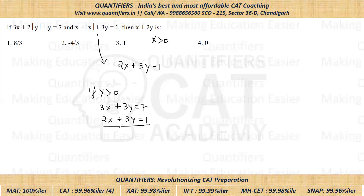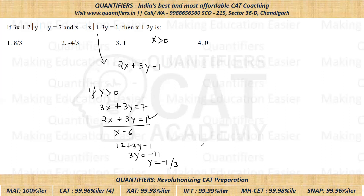The other equation was twice of X plus three times Y is equal to one. Now if I subtract the two equations, I'll get X is equal to six. Putting X equal to six in this particular equation, we'll get 12 plus three times Y is equal to one, which will give three Y is equal to negative 11 and Y is coming out to be negative 11 by three. Now mind you, we assumed Y to be positive and we are getting Y to be negative. That means Y is not positive.